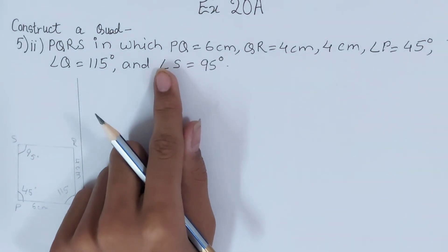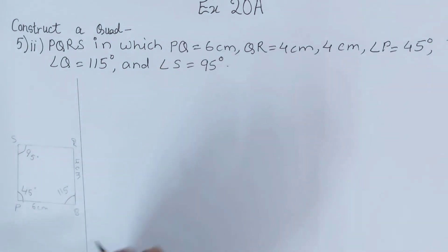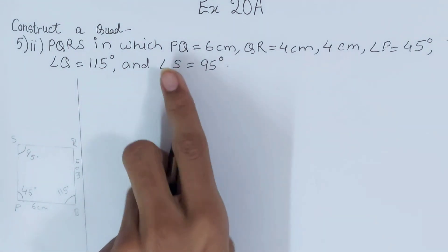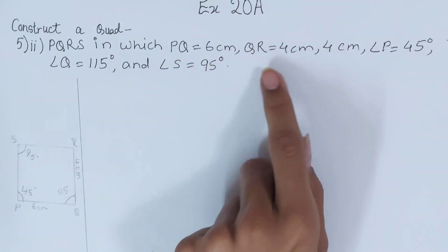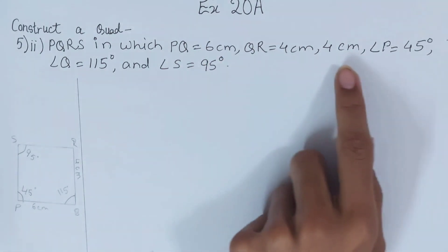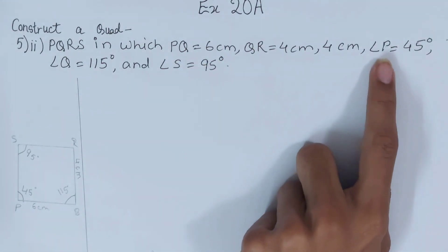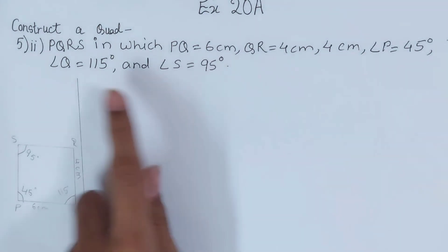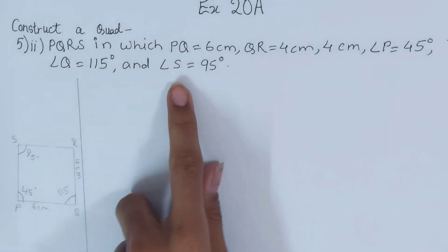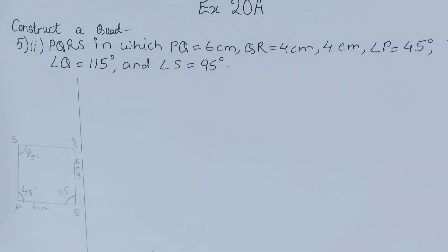We have to construct quadrilateral PQRS. PQ is 6 centimeters, QR is 4 centimeters, angle P is 45 degrees, angle Q is 115 degrees, and angle S is 95 degrees.